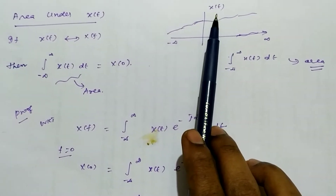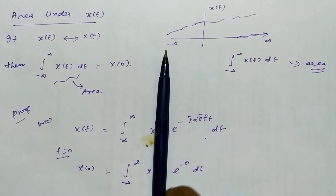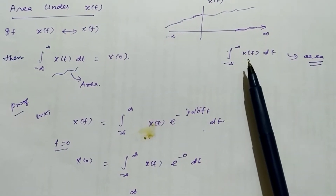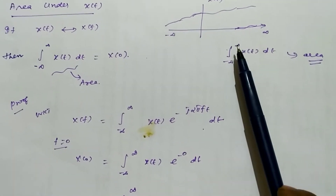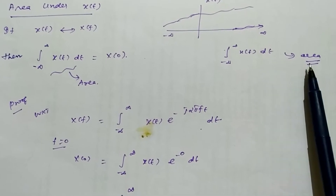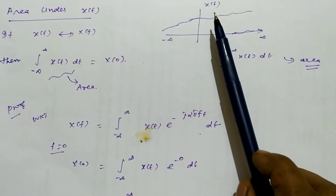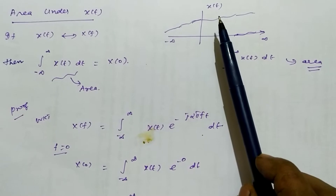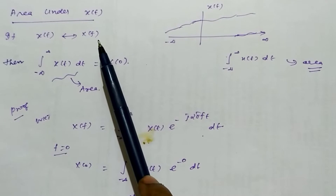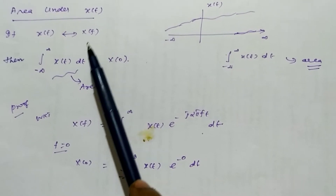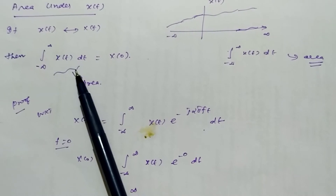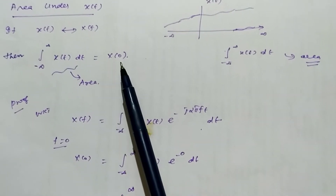Suppose we have the time domain signal x(t) whose area we want to find. That is when we integrate the given time signal over the given time period, this result is nothing but the area of that particular curve. This area can be achieved using the Fourier transform. That is, if x(t) has Fourier transform X(f), we find the area by replacing f with 0.